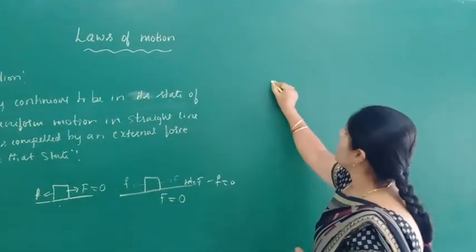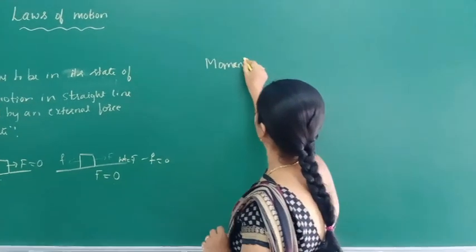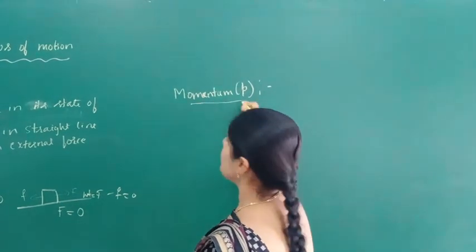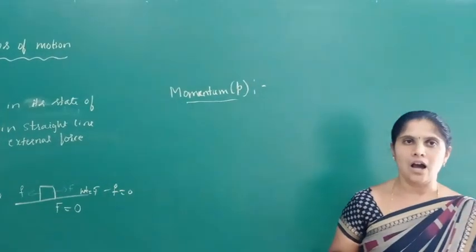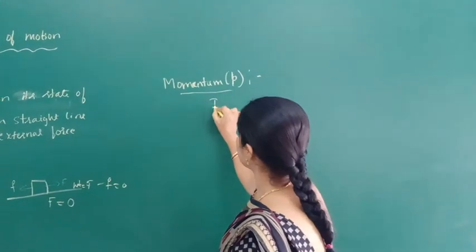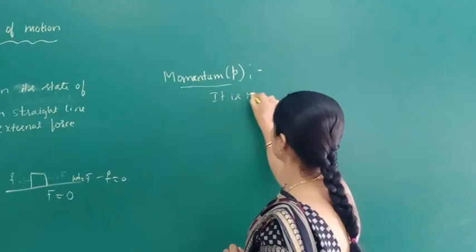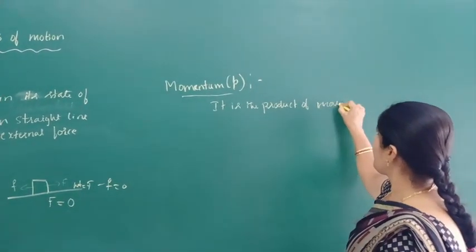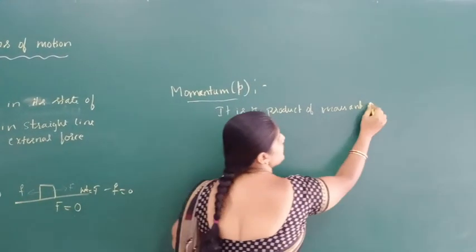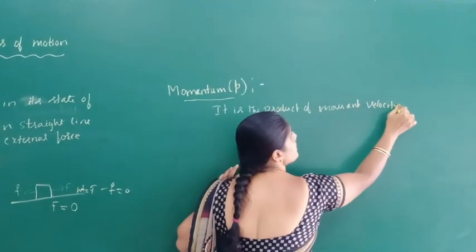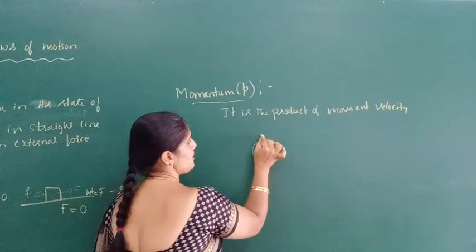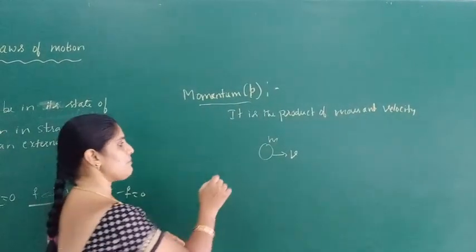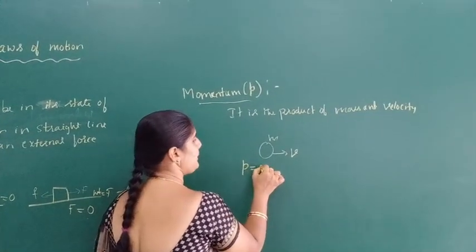Next, we discuss about momentum. Momentum is the product of mass and velocity.